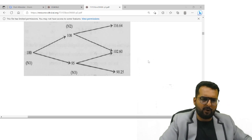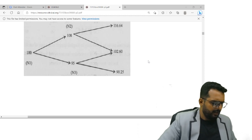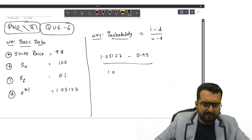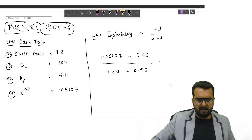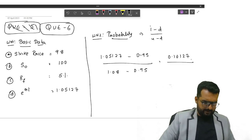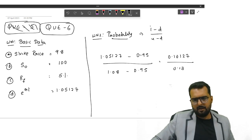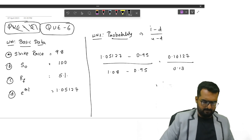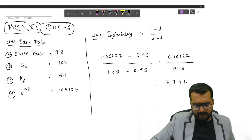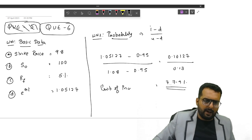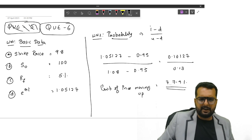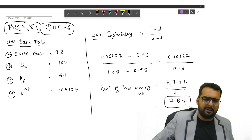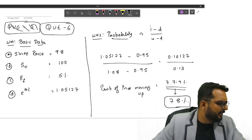I believe 90.25 divided by 95 will also be the same thing. Check it out, that is also the same thing. Divided by UD, U will be 1.08, 108 divided by 100, minus D is going to be 0.95. 0.10127 divided by 0.13, so do I get the answer as 77.9 percentage? This is the probability of price moving up. Okay, please write down this. In your textbook they have taken it as 78 percentage. Alright, so we are done with the first part.